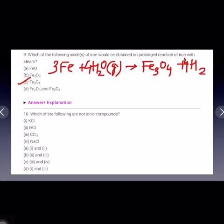So out of these four, HCl is not an ionic compound. CCl4, carbon tetrachloride, is also not an ionic compound. So the correct option is B part, second and third.